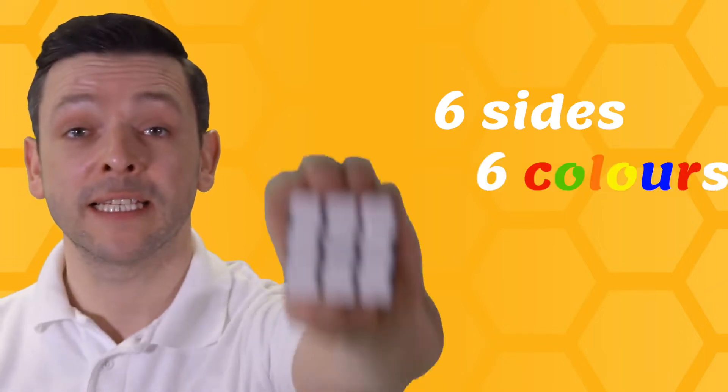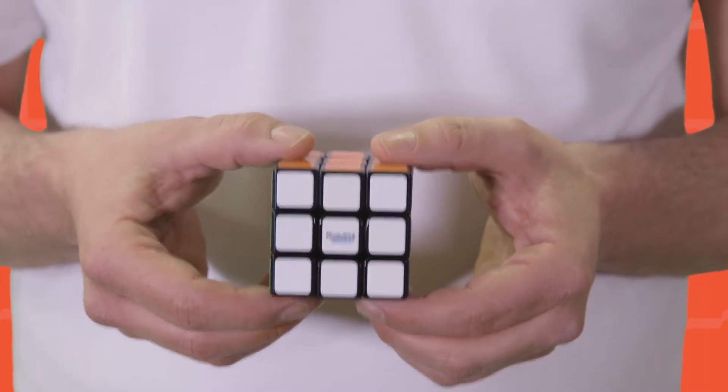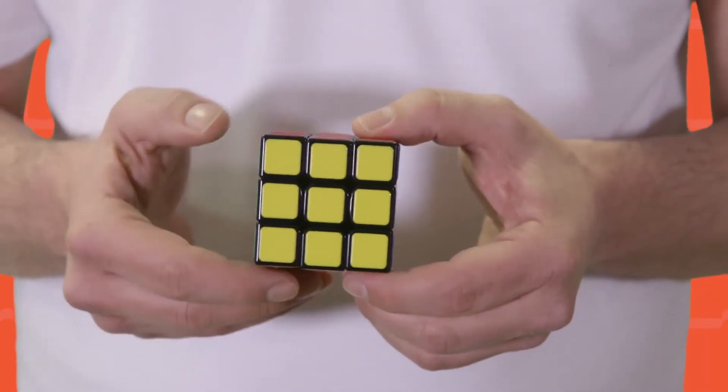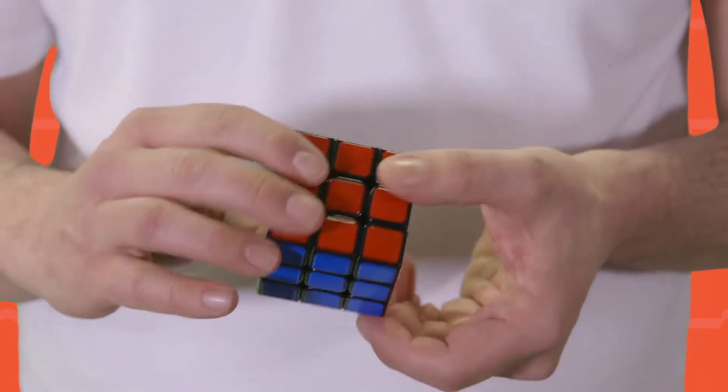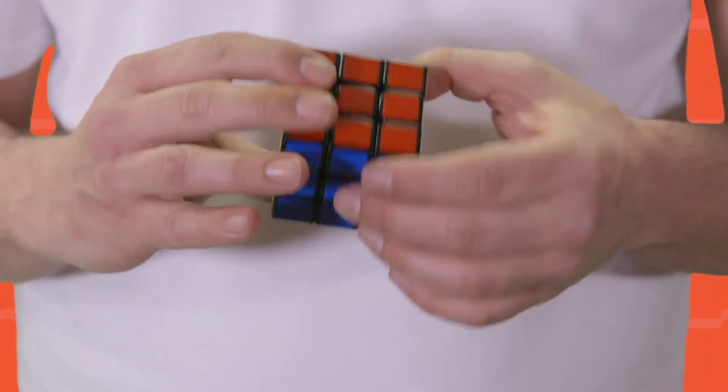The cube. Six sides, six colors. The colors are white and yellow, blue and green, and red and orange.